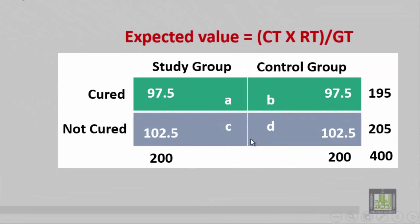Back to our four-cell table: the column totals are 200 and 200, the row totals are 195 and 205, and the grand total is 400. To calculate the expected value for A, we multiply its column total by its row total divided by the grand total: 200 times 195 divided by 400, which equals 97.5.